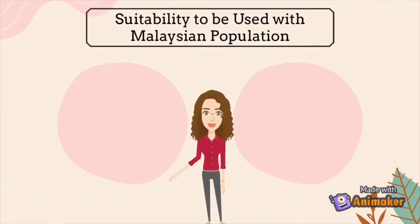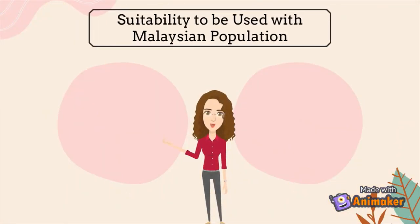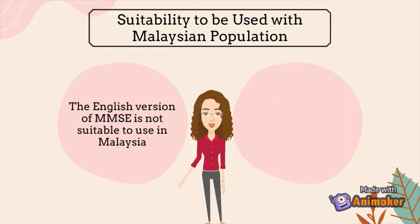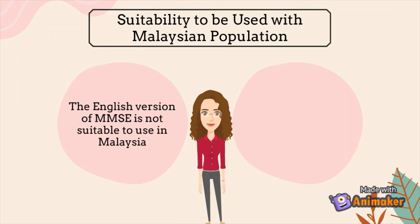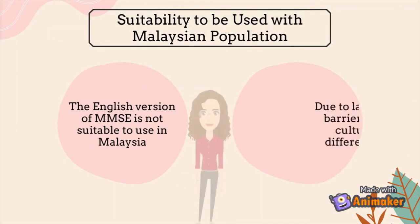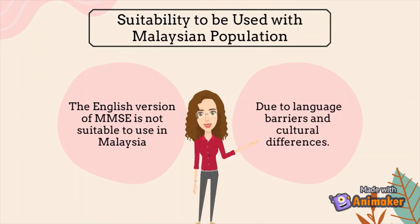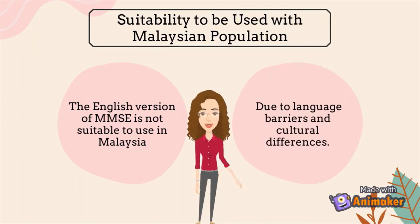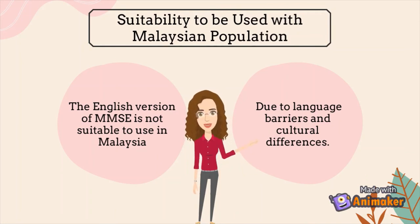For suitability with the Malaysian population, the English version of the MMSE is not suitable for use in Malaysia due to language barriers and cultural differences. For example, one question asks 'What is the season?' which cannot apply in Malaysia, as Malaysia does not have four seasons.